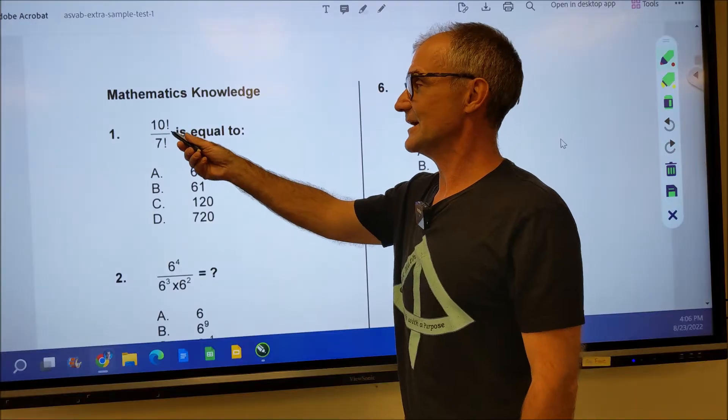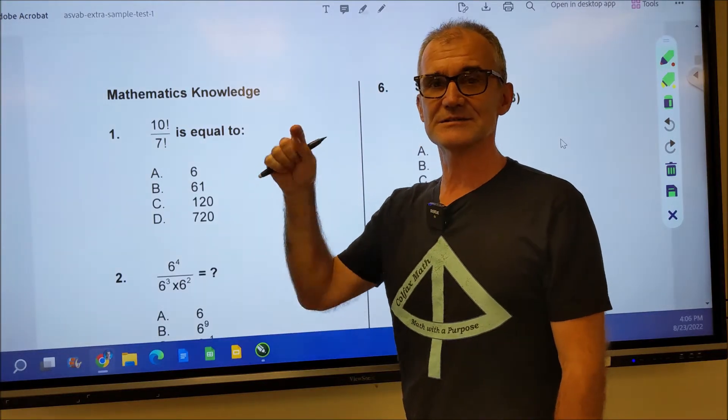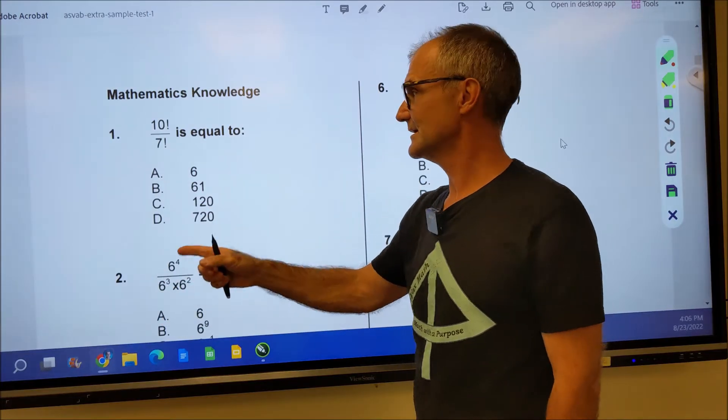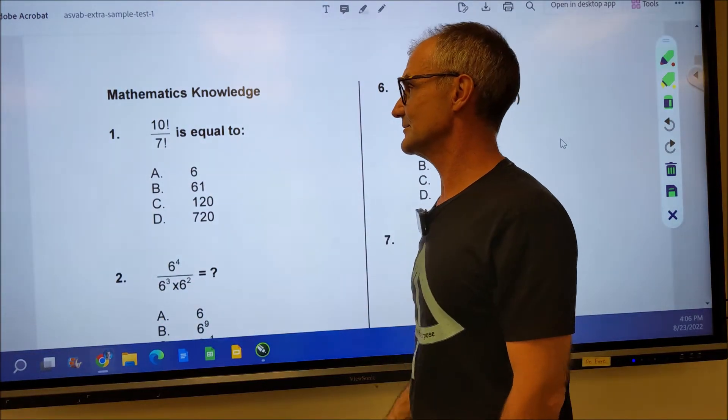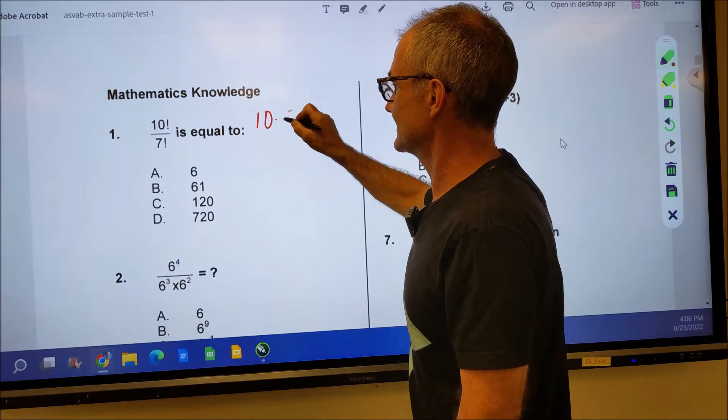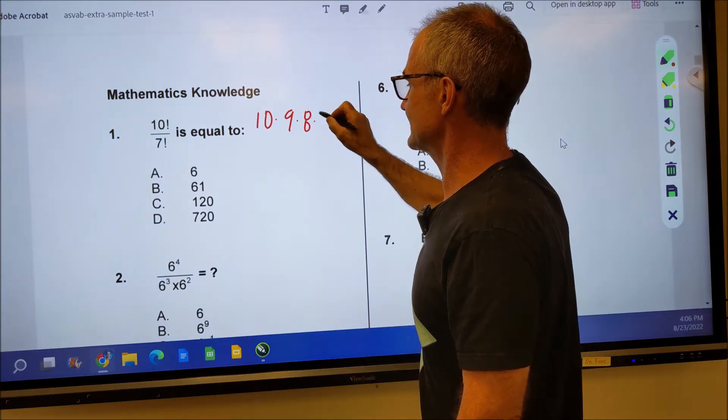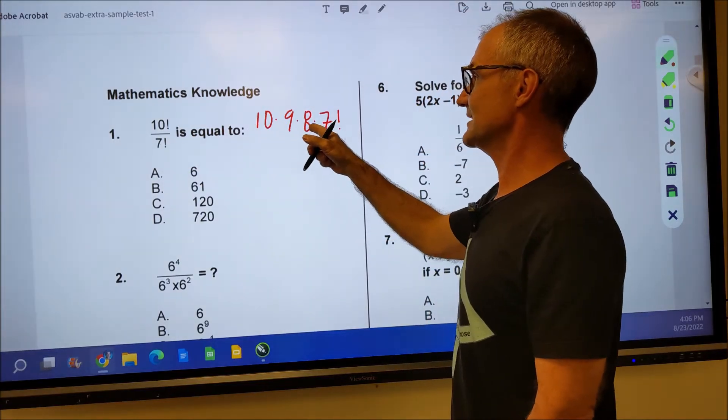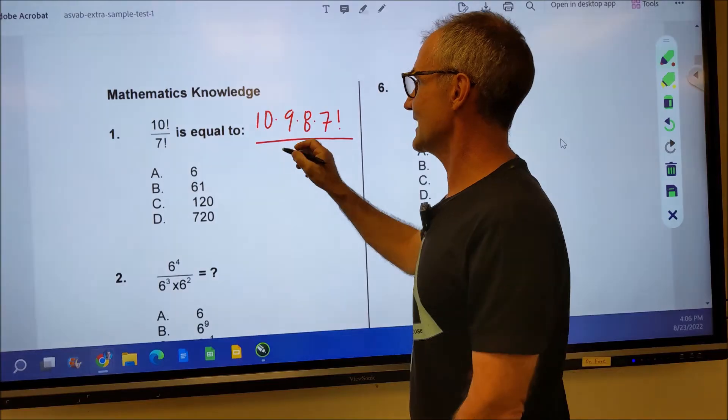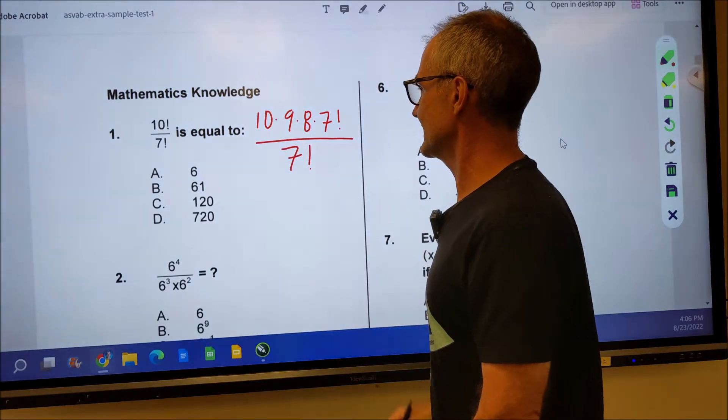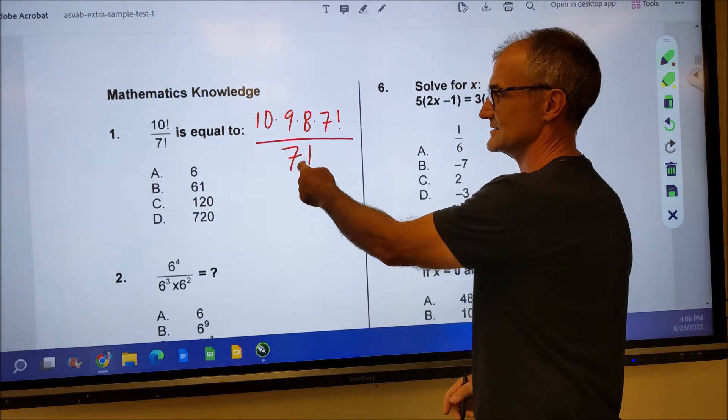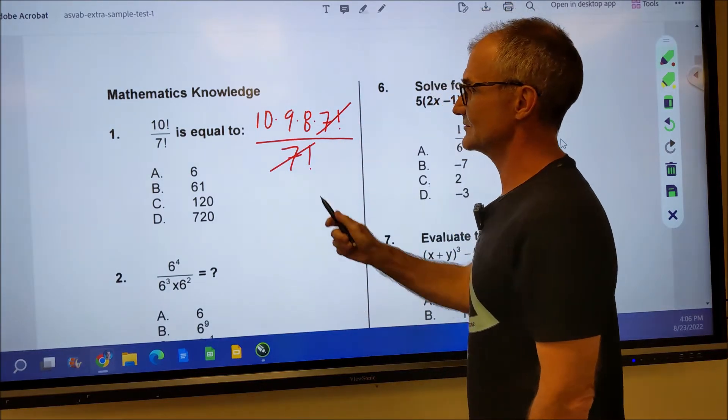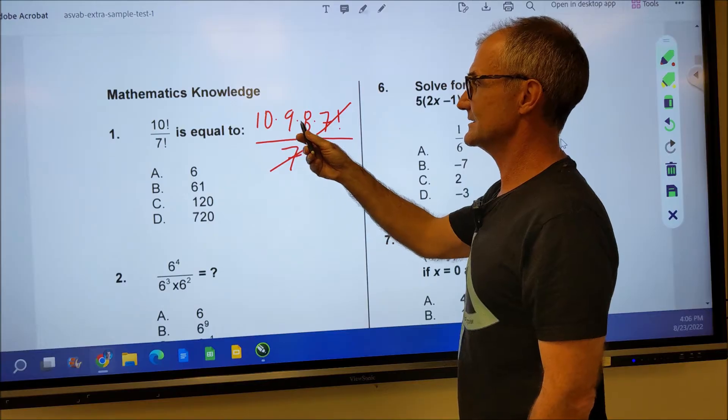This is 10 factorial. That exclamation point doesn't mean 10. It means 10 times 9 times 8 times 7 times 6 all the way down and then 7 factorial below it. So the way you do this problem is you write it out, not all the way down, but just to the denominator. So I'm just going to write that 10 times 9 times 8 times 7 factorial and I'm going to keep that as 7 factorial and then I can see this is 7 times 6 times 5. All those numbers will cancel with all those numbers and I'm left with only a 10 times 9 times 8.